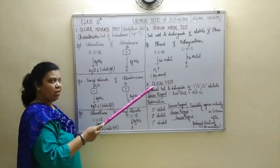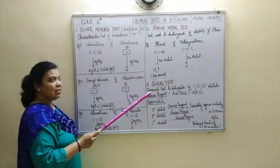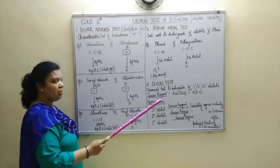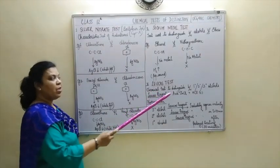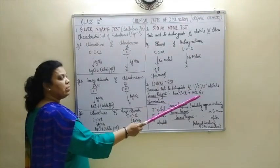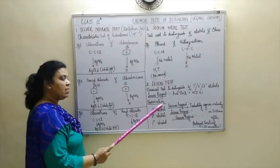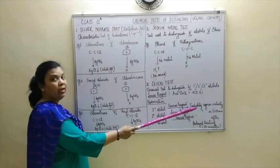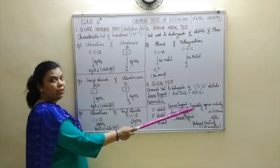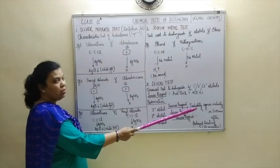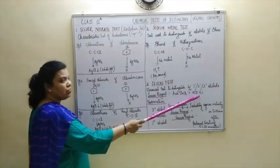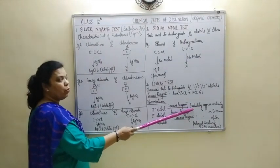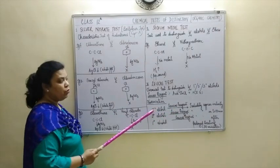Let us move on to the third test, and that is the Lucas test. Lucas test is a chemical test to distinguish between primary, secondary, and tertiary alcohols on addition of Lucas reagent. Lucas reagent is a mixture of anhydrous ZnCl2 and concentrated HCl. When you add Lucas reagent to a tertiary alcohol you will get turbidity — meaning milkiness — which appears because of the formation of chloroalkanes. Turbidity or milkiness appears due to chloroalkane formation when concentrated HCl is added.